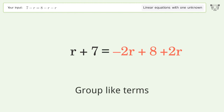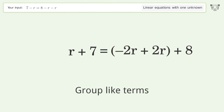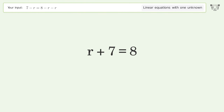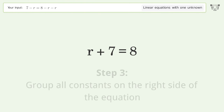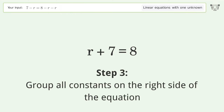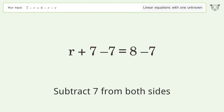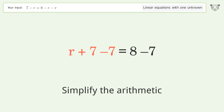Group like terms. Simplify the arithmetic. Group all constants on the right side of the equation. Subtract 7 from both sides. Simplify the arithmetic.